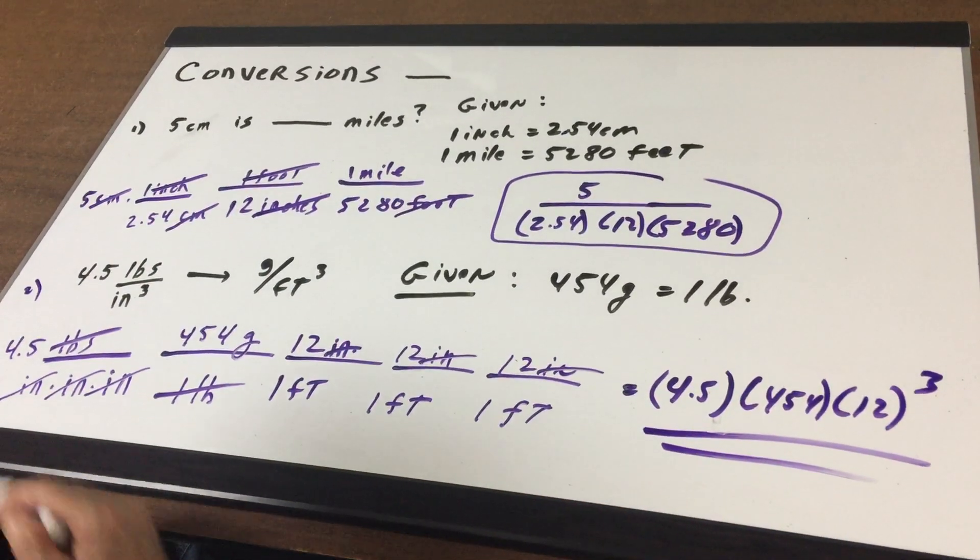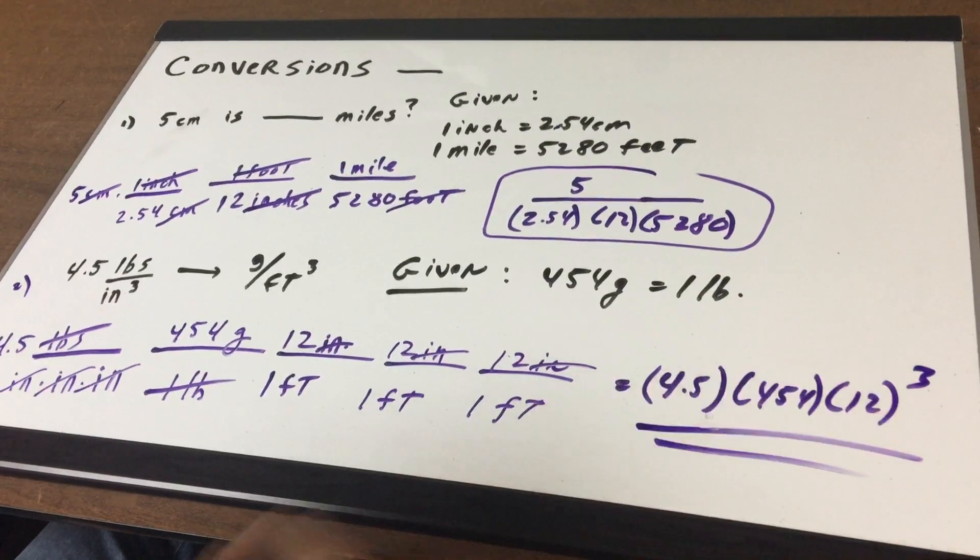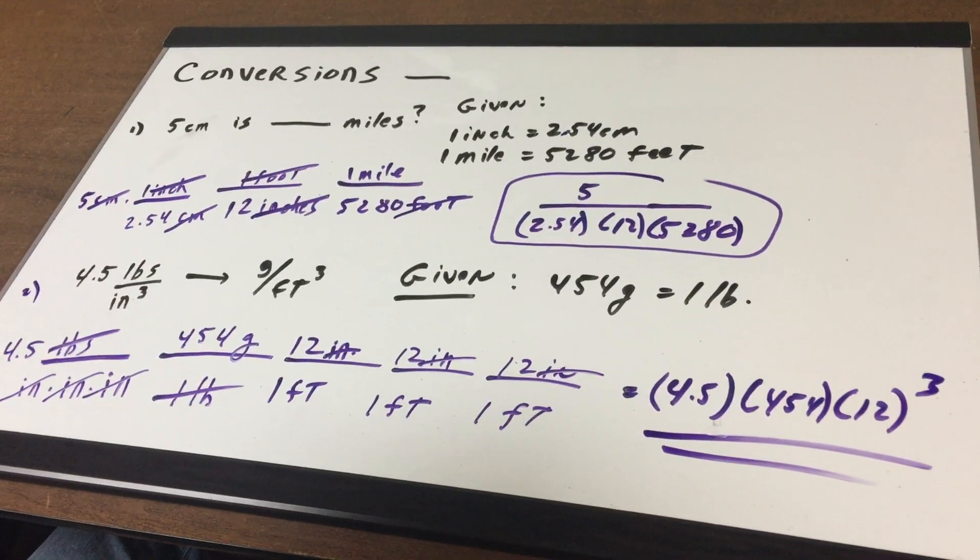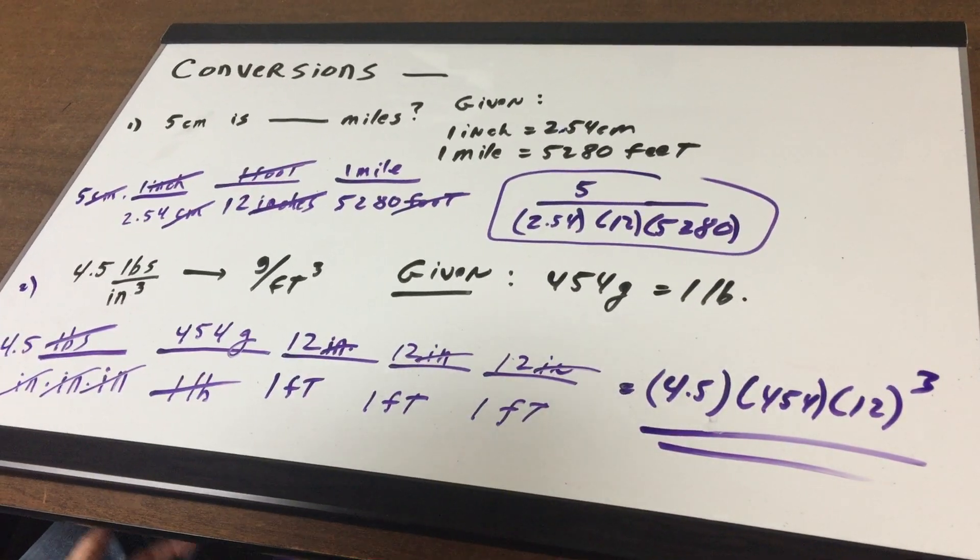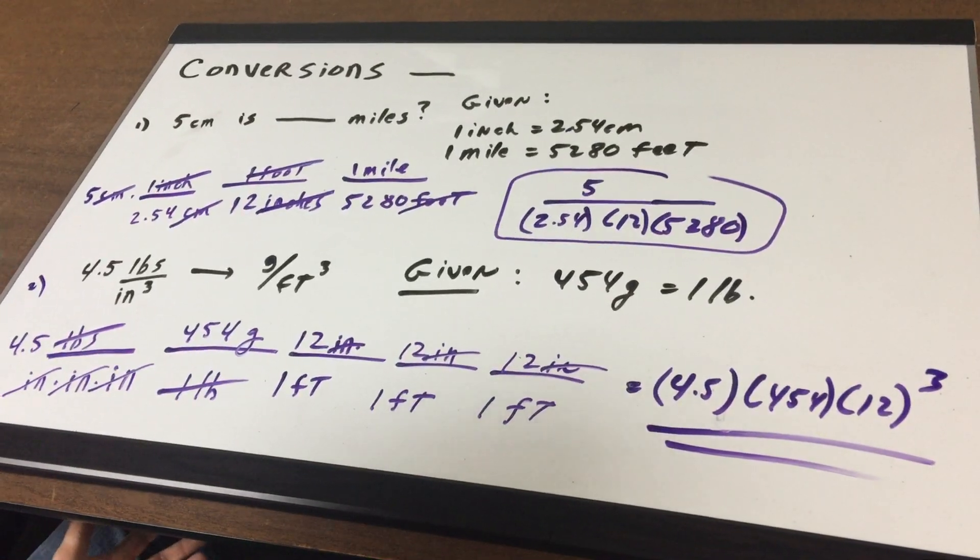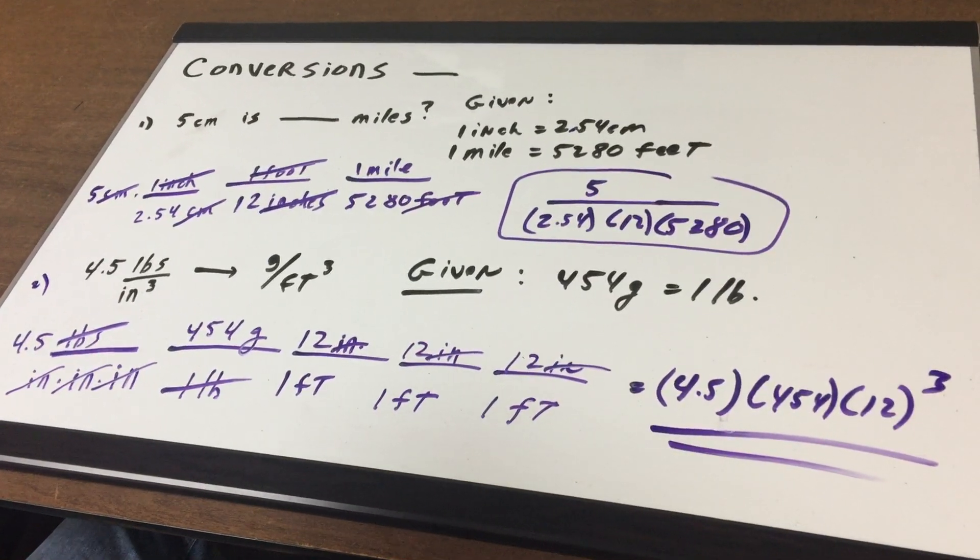So I hope you can see the way you would do this conversion and just set it up is 4.5 times 454 times 12 cubed. And that's the way you would do what we call the double conversion.